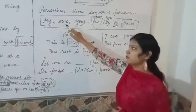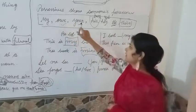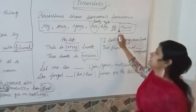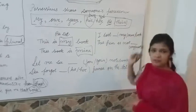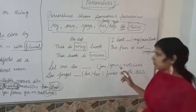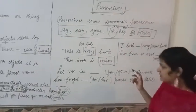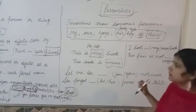The possessive determiners are: my, our, your, his, her, its, and their. 'His' is used for a boy, 'her' for a girl, and 'its' for non-living things. Now let me give you some exercise to clear the topic.